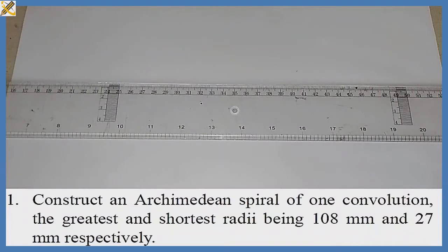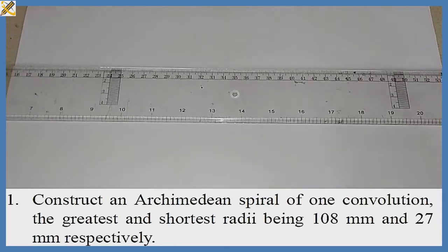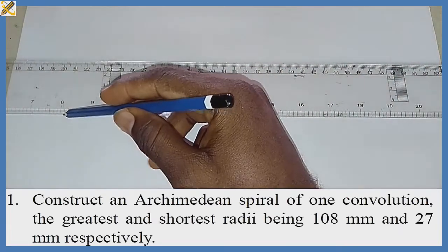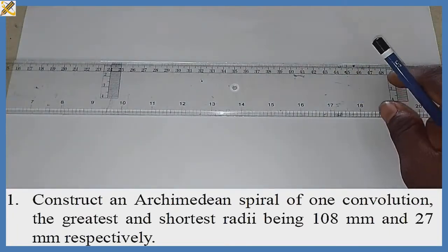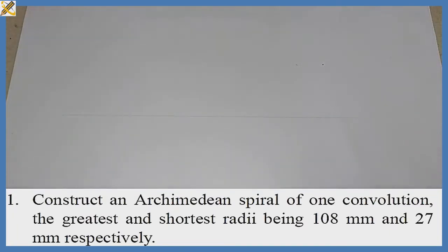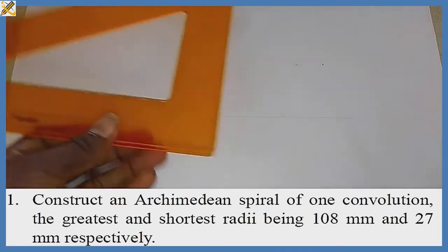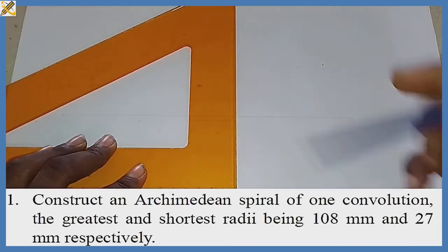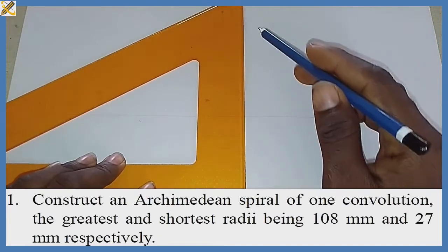We are going to produce an Archimedean spiral of one convolution, with the greatest and shortest radii being 108mm and 27mm respectively. The very first thing I'm going to do is produce a faint horizontal line, and after that I'm going to produce a vertical line right on that horizontal line.